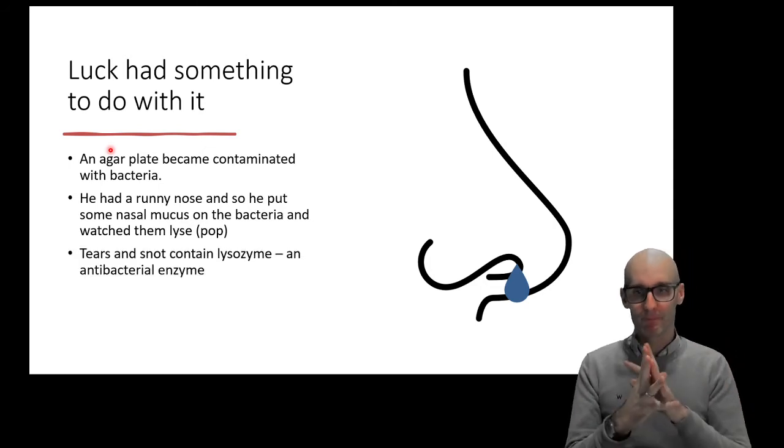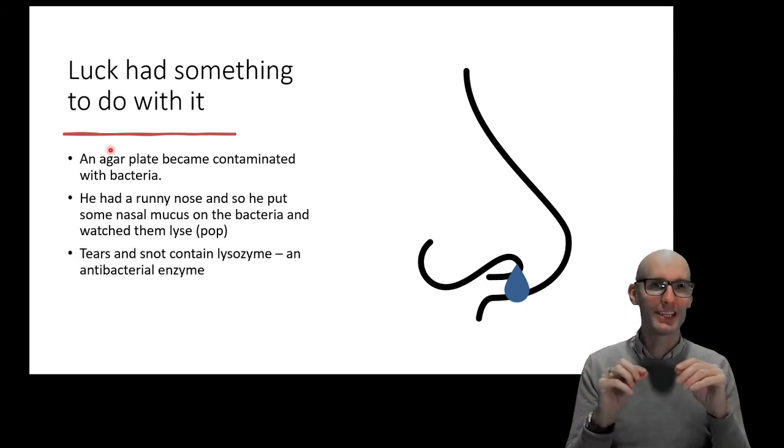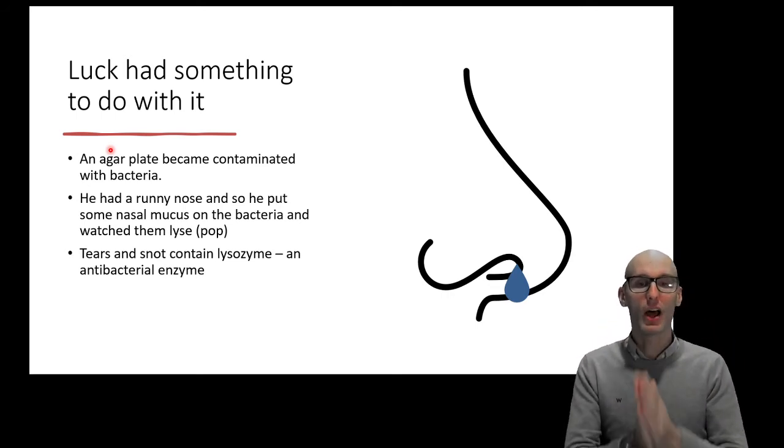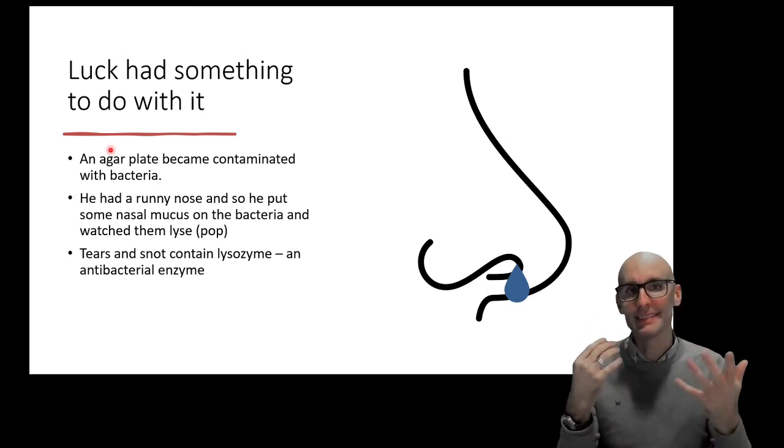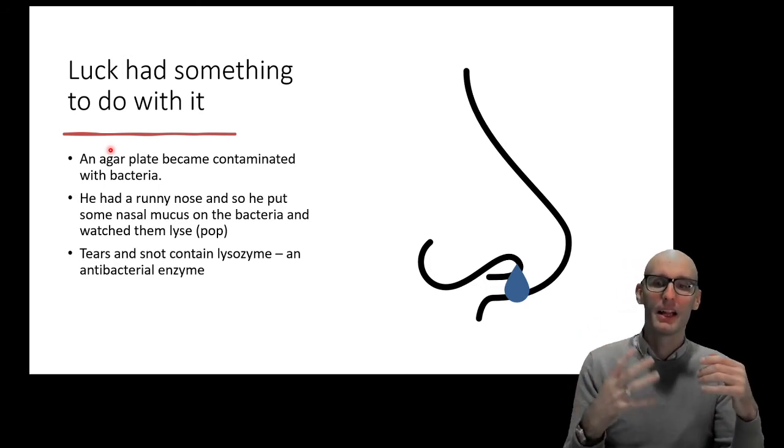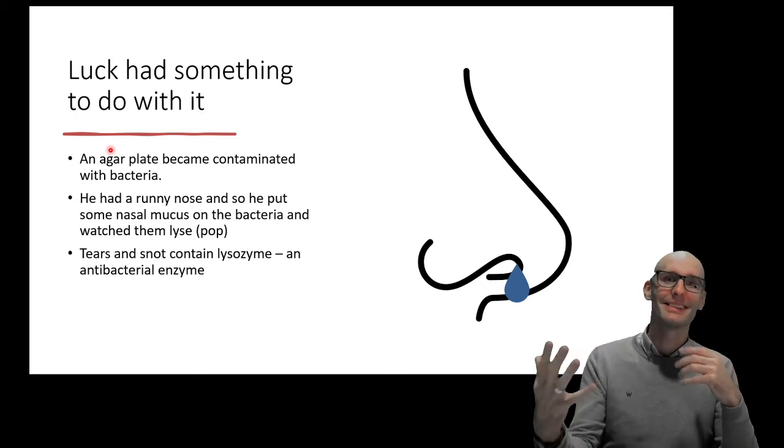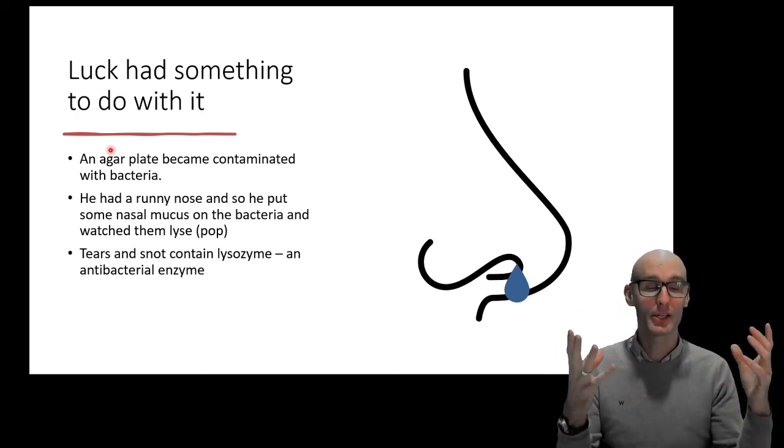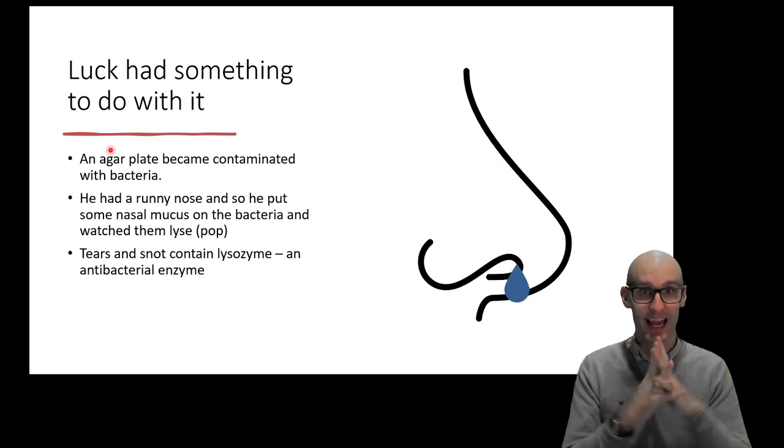And he went on, and the researchers were squirting lemons in their eyes to induce tears. And he found tears and snot contain a protein. And this protein is called lysozyme. Zyme means enzyme. So it's an enzyme. Lys means to pop. So it's an enzyme that induces popping of bacteria. And this is an antibacterial enzyme found in our tears and our snot.